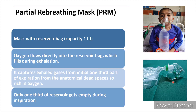The partial re-breathing mask consists of a mask connected with a reservoir bag of 1 liter capacity. It is connected via oxygen tubing to the oxygen source. When the baby exhales, oxygen flows directly into the reservoir bag. The mask is designed so that exhaled gas from the initial one-third of expiration — from the anatomical dead space, which is rich in oxygen — fills the reservoir bag. During inspiration, only one-third of the reservoir bag oxygen is emptied.